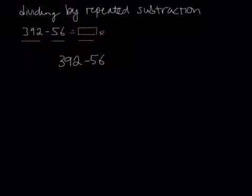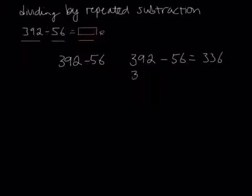So that becomes 392 subtract 56, which gives me 336, 336 subtract 56, gives me 280, and you'll notice I'm being careful to align numbers neatly.